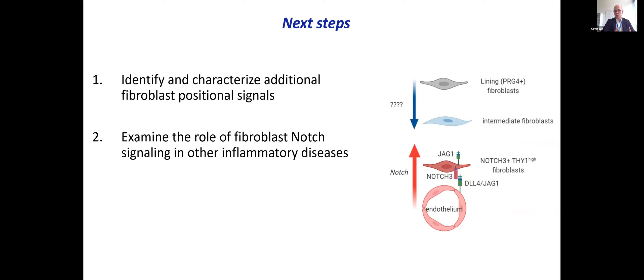In terms of next steps, we're working on figuring out what additional signals establish the positional identity of fibroblasts. We know one pathway driving sublining fibroblast expansion is endothelial-derived Notch, but we don't yet know what drives lining fibroblast differentiation or the intermediate subset — perhaps additional morphogen pathways unique to the local environment. The second direction is examining whether the Notch pathway is relevant in expansion of fibroblasts in other inflammatory diseases, such as interstitial lung disease or inflammatory bowel disease.